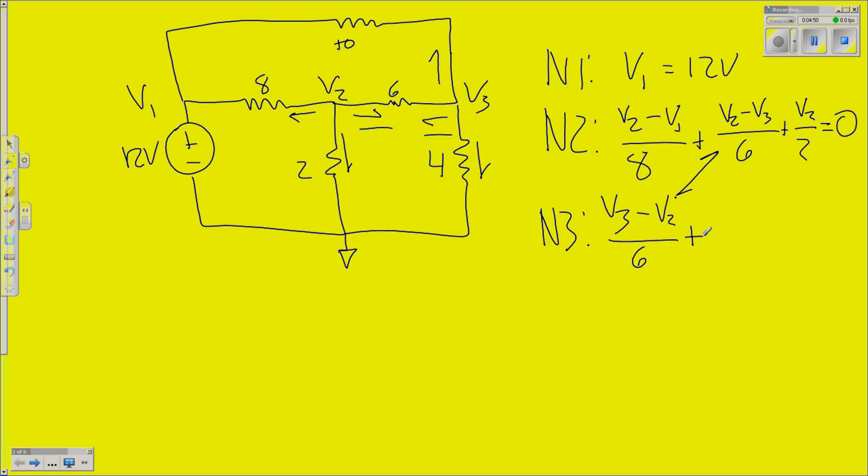Then, I go to my next current: V3 minus V1, all the way back over our circuit, over that 10 ohm resistor at the top, and then last, V3 over 4. Of course, do not forget that it equals 0. That is how we do node voltage. We have taken each of these nodes, put it in terms of voltage and resistance, and use Kirchhoff's current law to make our system work.